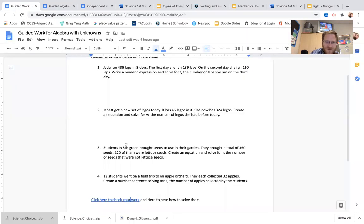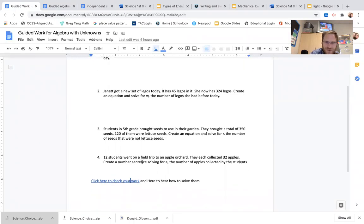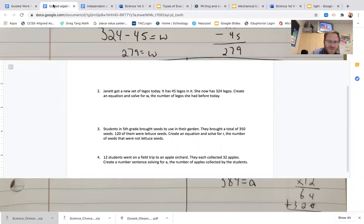All right, so if we went to number four, the last one. Students went on a field trip to an apple orchard, and they each collected 32 apples. So there's 12 students that each collected 32 apples. Create an equation and solve for A, the number of apples that were collected by the students.